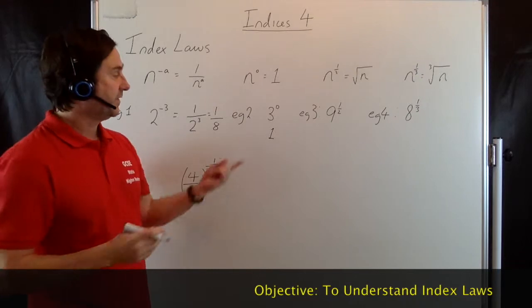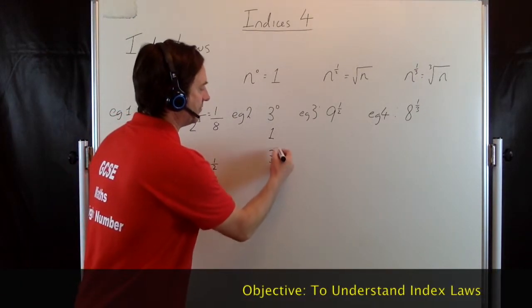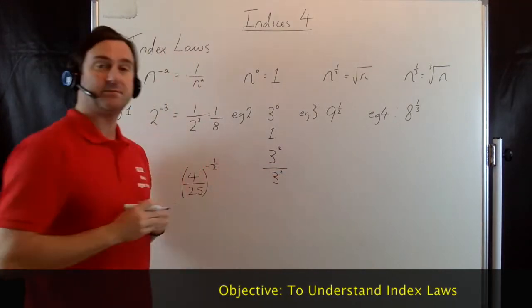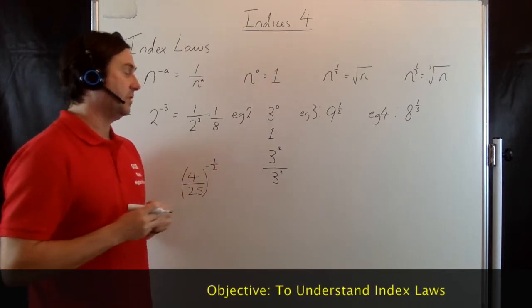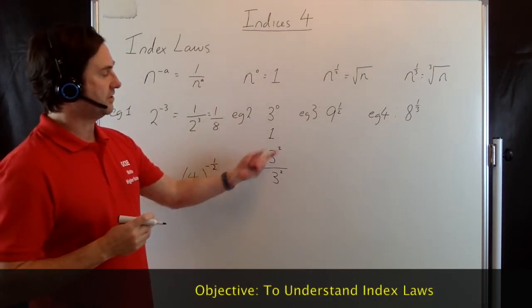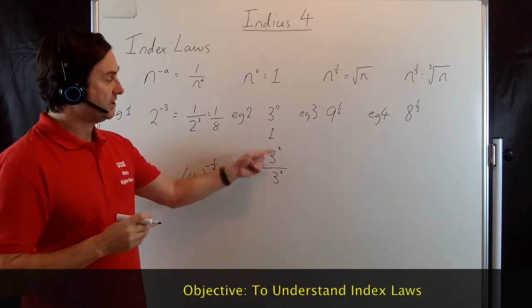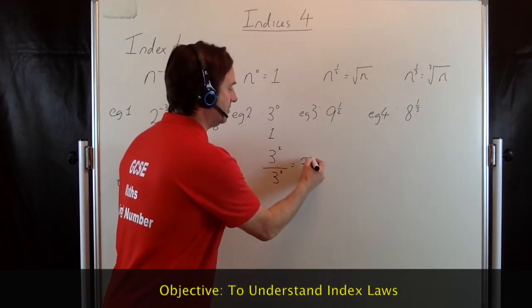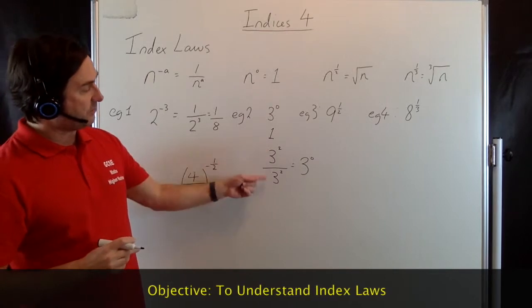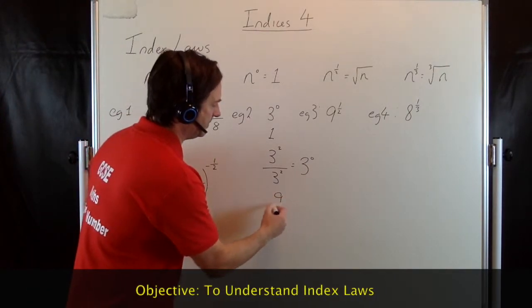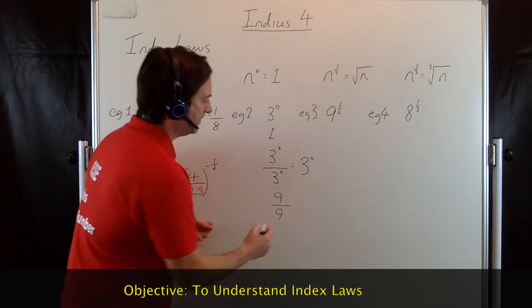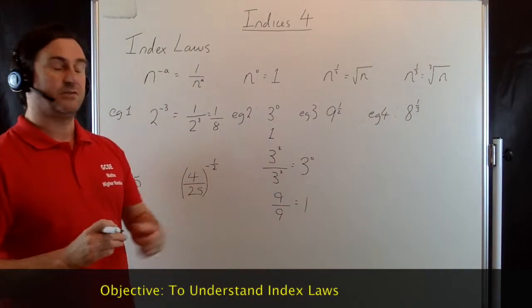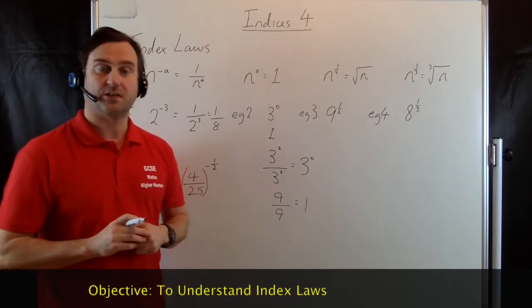However, let's see why that works out. Let's say for example we had 3 squared and we divide that by 3 squared. Well, using our previous rule that we looked at, if you have 3 to the 2 divided by 3 to the 2, we subtract the indices. So this becomes 2 take away 2, which is 3 to the 0. But now let's actually work these out: 3 squared is 9, 3 squared is 9, and 9 divided by 9 is actually going to give us 1. So that's why this works out the way it does.